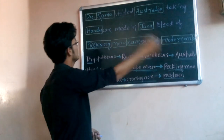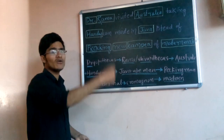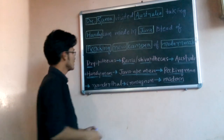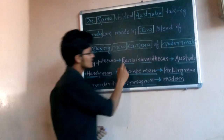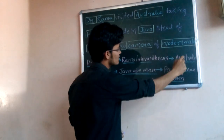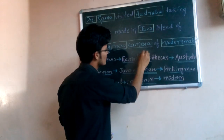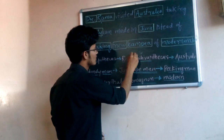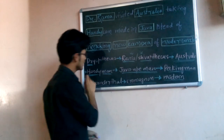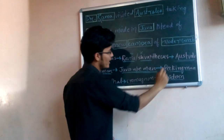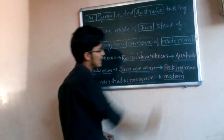To recapitulate: 'Dr. Rama visited Australia taking Handycam made in Java instead of picking new camera of modern make' gives us the full sequence: Dryopithecus, Ramapithecus and Shivapithecus (which are the same — don't confuse these two options), Australopithecus, Handyman, Java Man, Peking Man, Neanderthal Man, Cro-Magnon Man, and Modern Man.